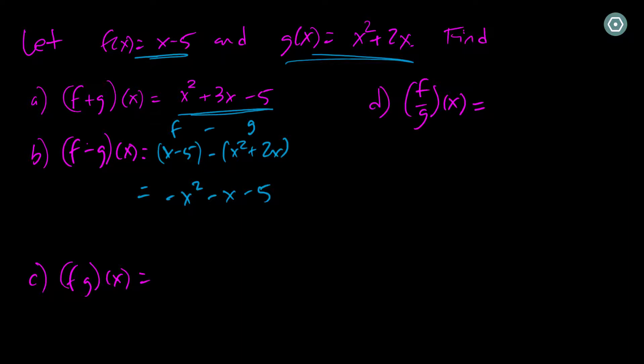Now to do f times g of x, I need to take f, which is x minus 5, times g, which is x squared plus 2x. Now I'm going to solve this through the FOIL method. So if you remember, that means the first, which in this case would be x times x squared, which is x cubed.